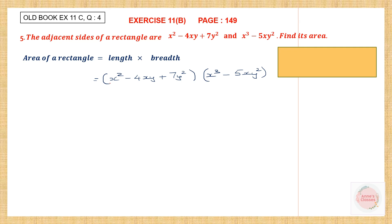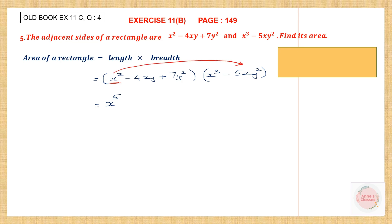So we begin with x squared. We are going to multiply with the first term: x squared into x to the power of 3 is x to the power of 5. Then we are going to multiply x squared with minus 5xy squared. So x squared into minus 5xy squared: the sign is minus, giving us minus 5x cubed y squared.